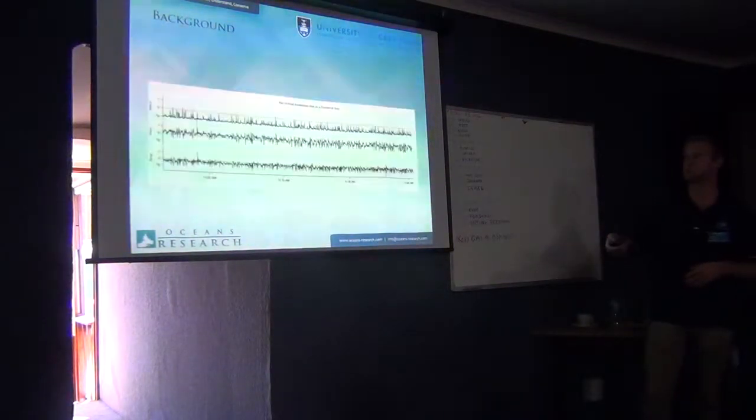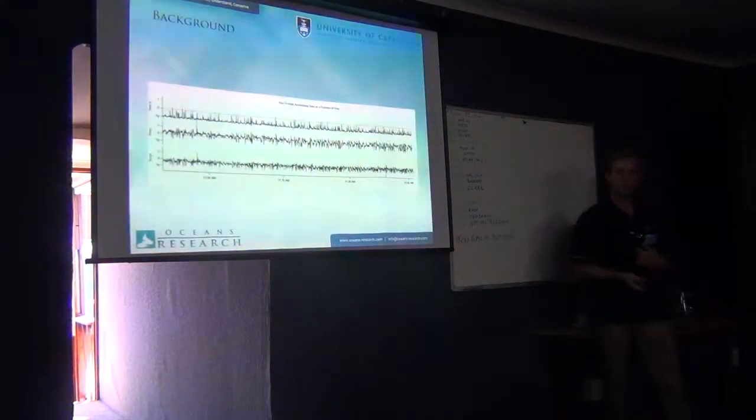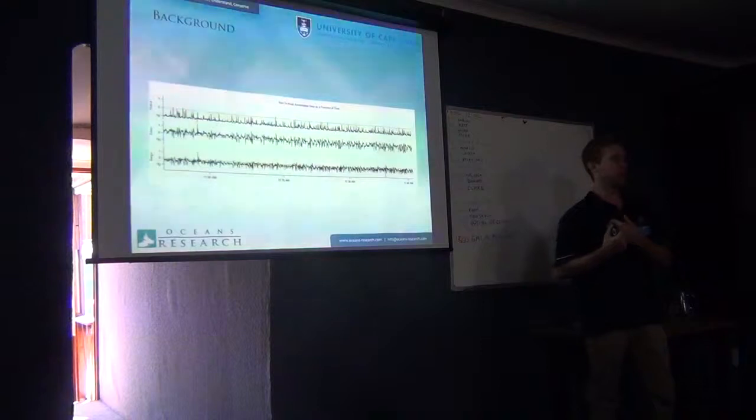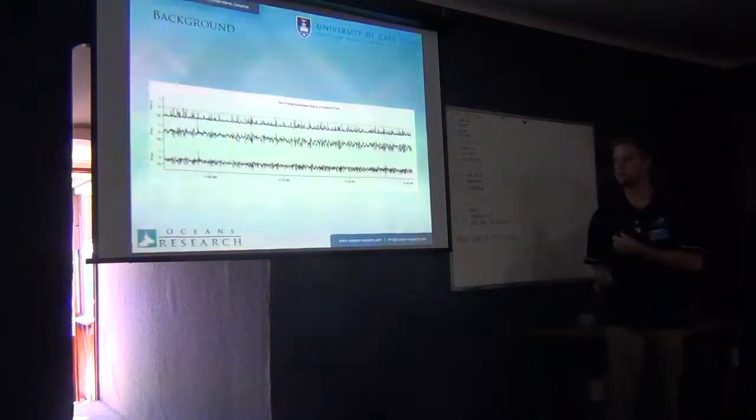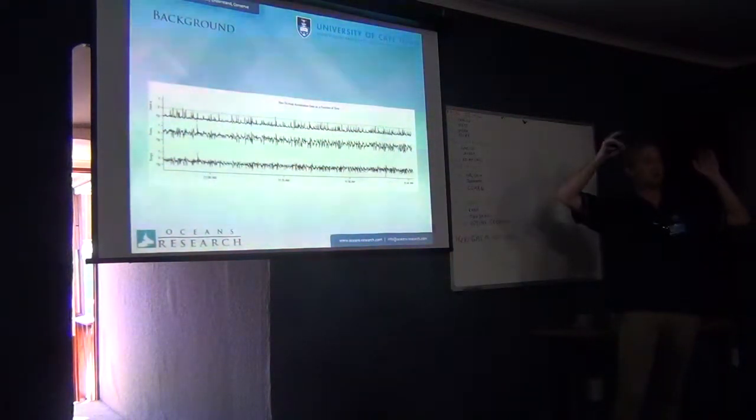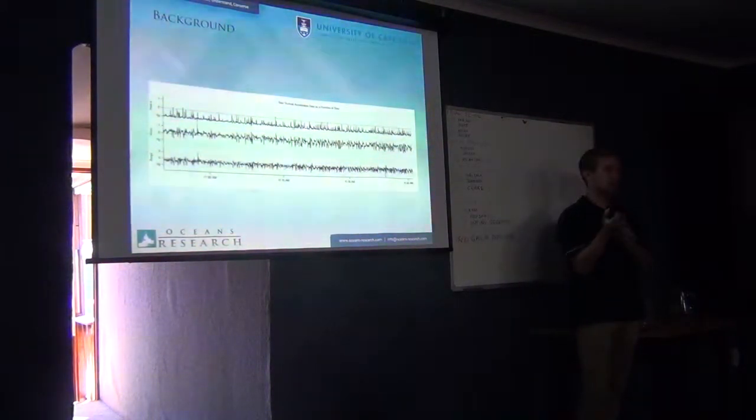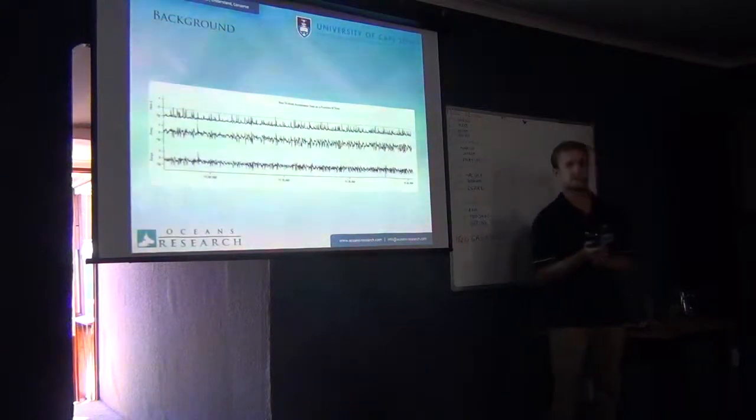So we start adding sensors to these tags. Nowadays we've got about 24, I think, different sensors that are commonly in use. Things like ECGs, measuring heart rate of a free swimming animal. CTDs, measuring the external environment that the animal is swimming through. The conductivity, the temperature, the water depth. The accelerometer is one of these new devices that I've been playing with.